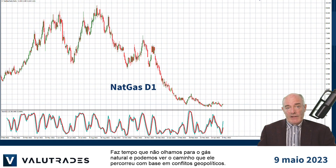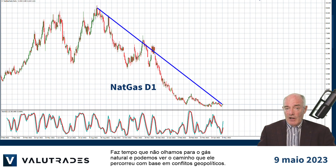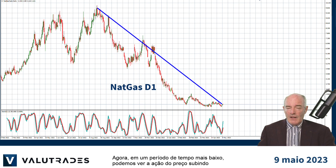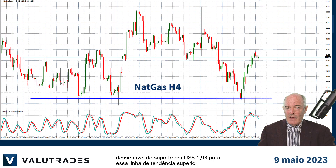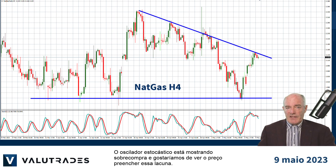We haven't looked at Natural Gas for a while and we can see the journey it has taken on geopolitical conflicts. Now on a lower time frame we can see price action rising from this level of support at $1.93 to this upper trend line. The Stochastic Oscillator is showing overbought and we would like to see this price gap filled.